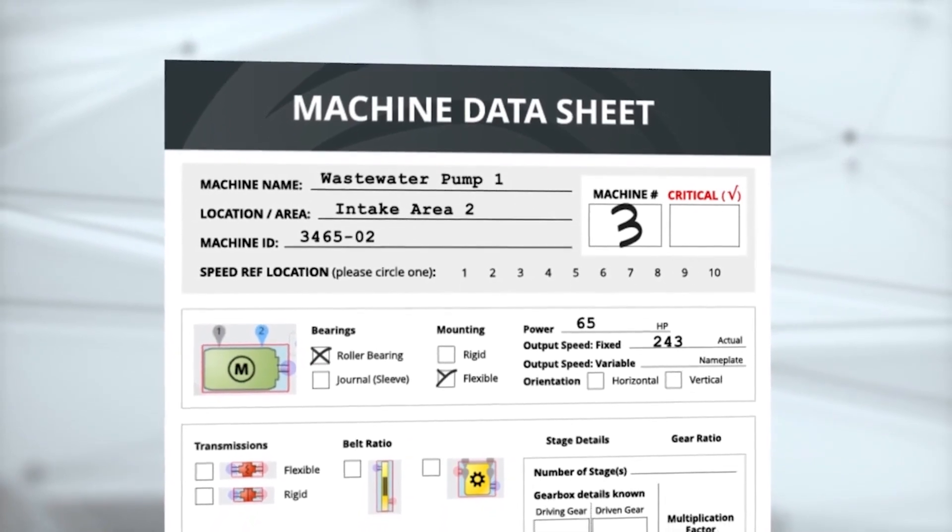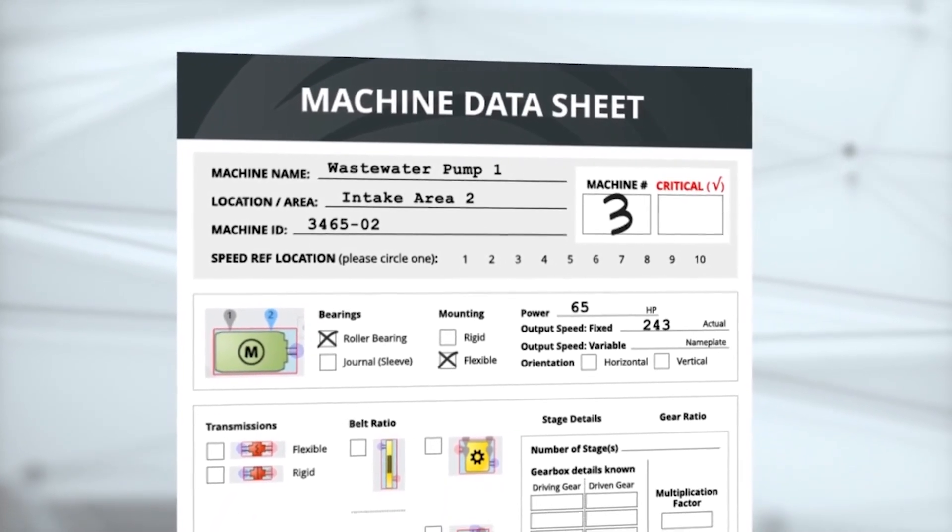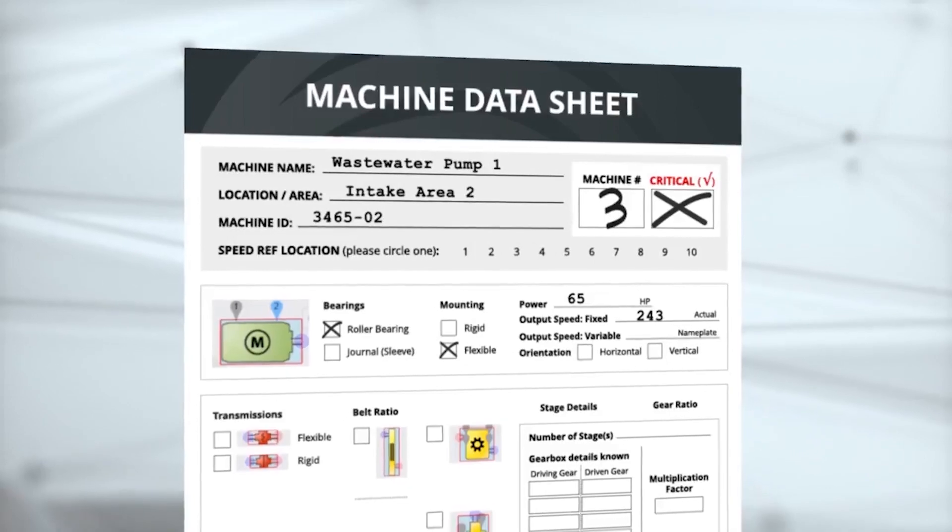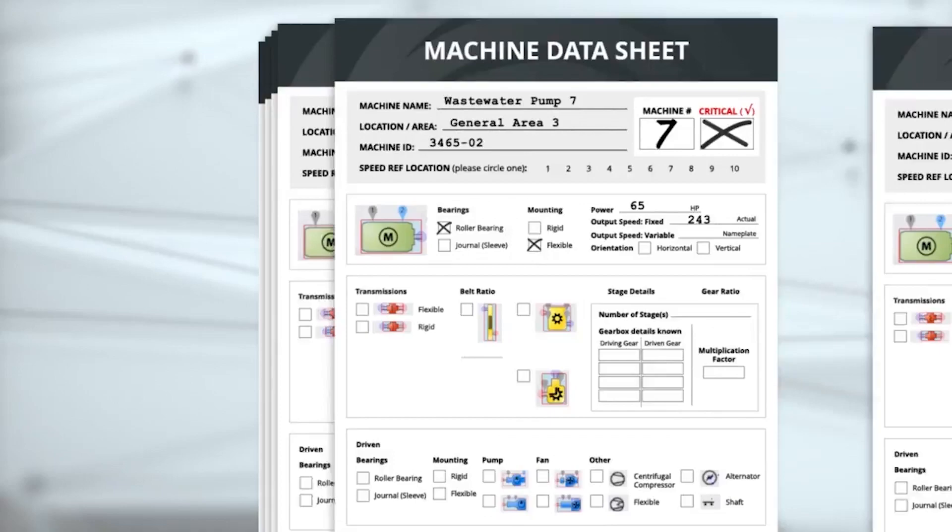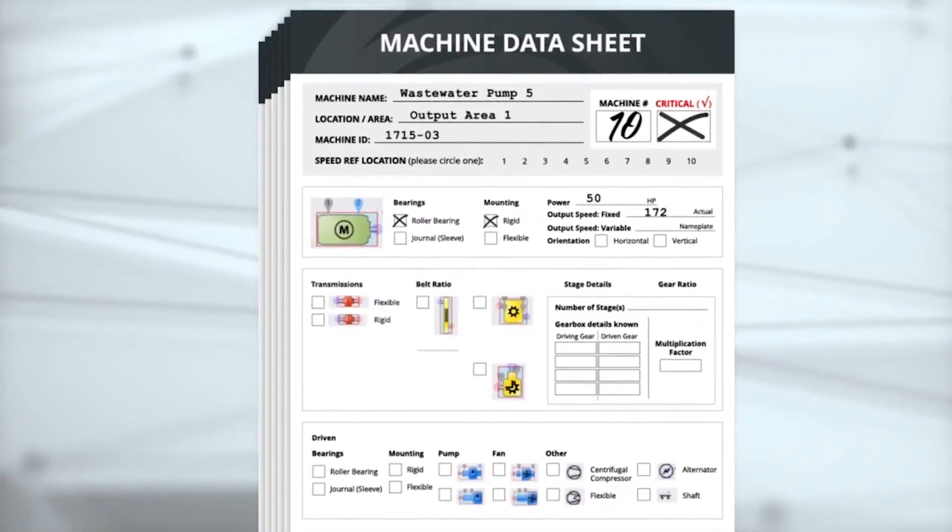The sheets include a checkbox in the corner to designate between critical and non-critical machines. Having a binder or notebook for each route is helpful to keep a record of the data for each machine.